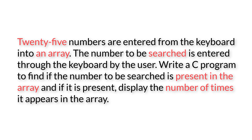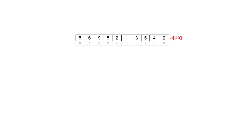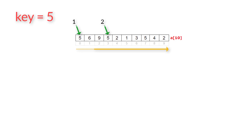Let me explain with an example. Assume that we have an array of 10 elements. If the user enters key as 5, we traverse the entire array from index 0 to 9 and for each occurrence of the key element which is 5, we keep a count of it. At a[0], a[3], and a[7] we have 5, so in total 5 has occurred three times in this array. We display that on the console window.